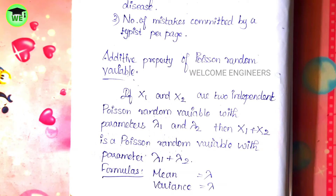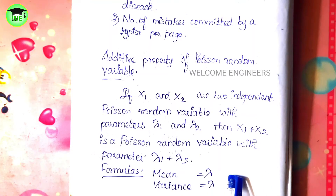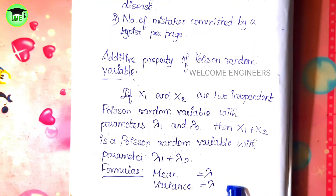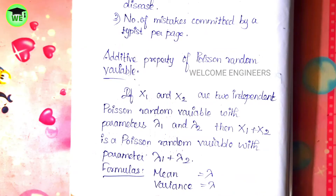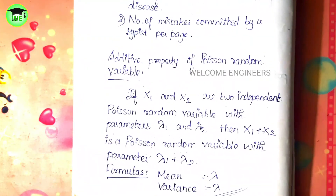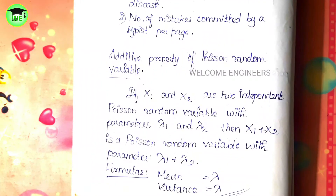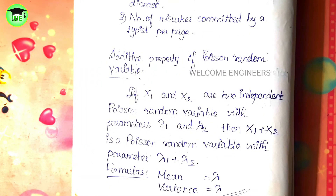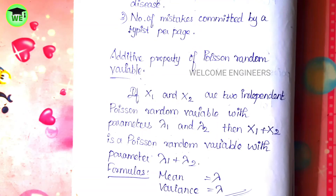In Poisson distribution, the expected value — that is, the mean — is given by lambda, and the variance formula is also lambda. This is one important thing to know: in Poisson distribution, mean and variance are equal, both equal to lambda, because there is only a single parameter lambda.